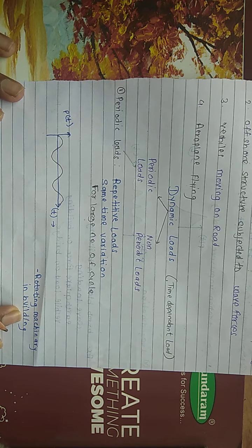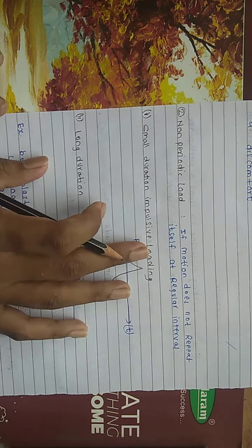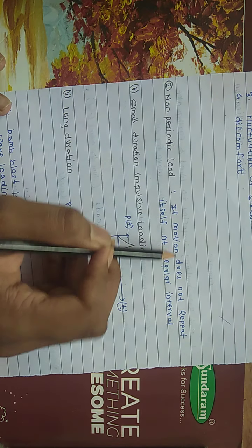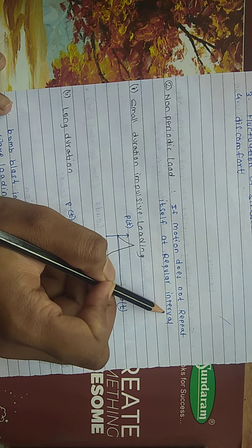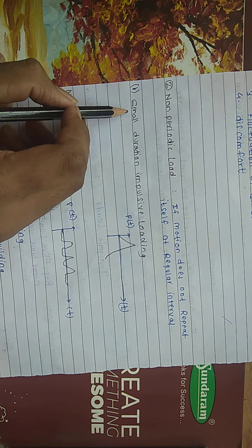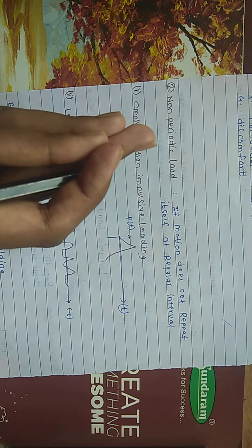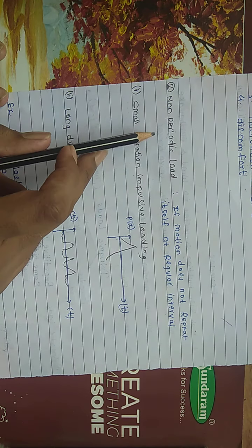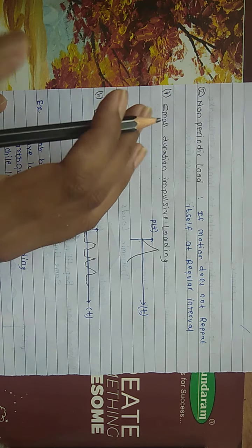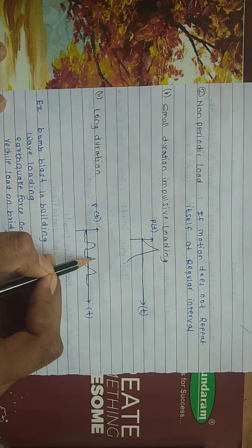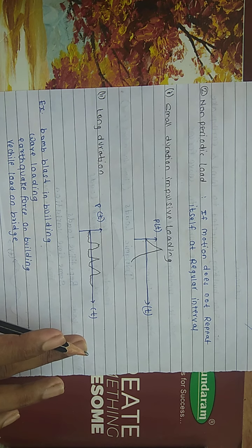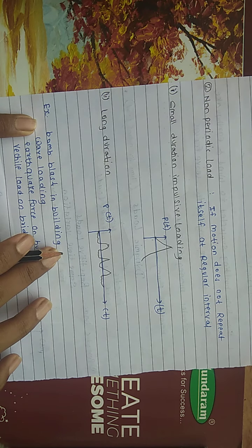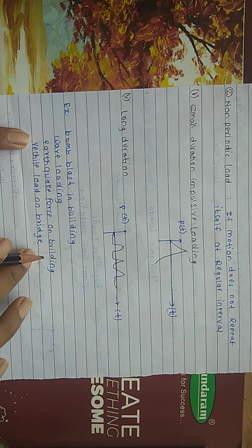An example of periodic load is a rotating machine in a building. Non-periodic load is when motion does not repeat at regular intervals. There are two cases: small-duration impulsive loads (load is high but for a short duration), and long-duration loads (such as offshore structures subjected to waves, where intensity does not vary much). Examples of non-periodic loads include bomb blasts, wave loading, earthquake forces, and vehicle loads on bridges.